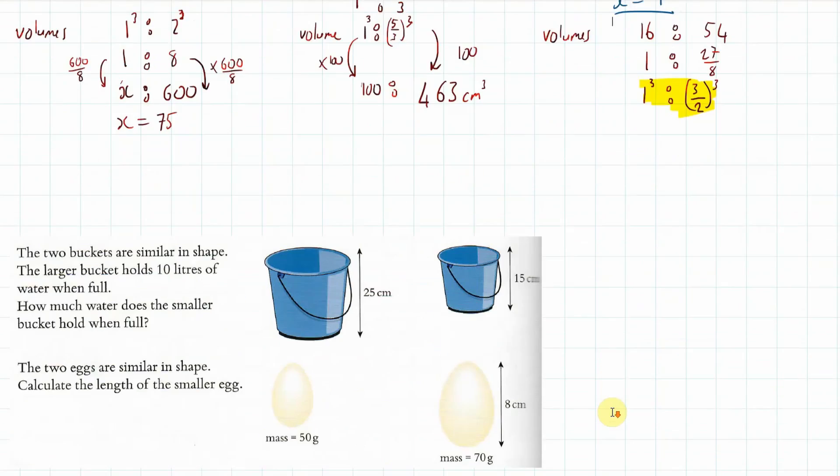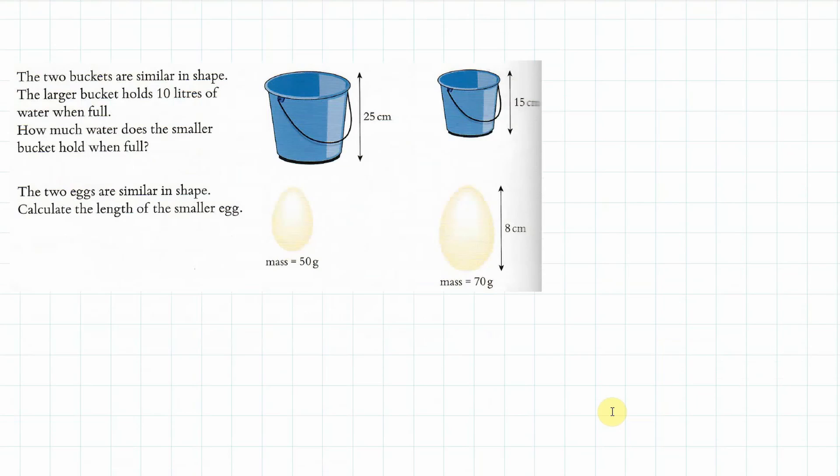Now, a couple of word problems. So, the first one is these buckets. And you can see that length ratio here, or height ratio, is 15 small bucket to 25 big bucket. And that's 3 to 5. And we could say 1 to 5 thirds. The larger bucket holds 10 liters. We know, therefore, because we know this here, we know that the ratio of volumes must be 1 cubed to 5 thirds cubed.